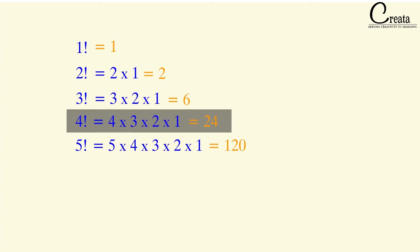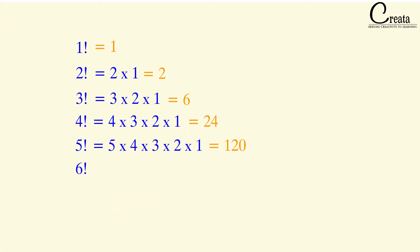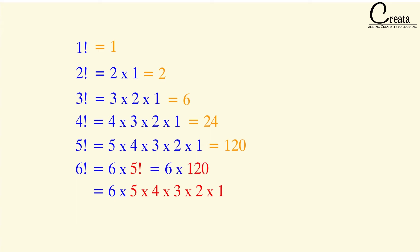If you know the factorial of any value, you can calculate the factorial of the next number by just multiplying the next number with the factorial of the previous number. 6 factorial equals 6 into 5 factorial. 5 into 4 into 3 into 2 into 1 is basically 5 factorial, which we know is 120. So 6 factorial is 6 into 120, that is 720. These small observations will help you in solving bigger questions.